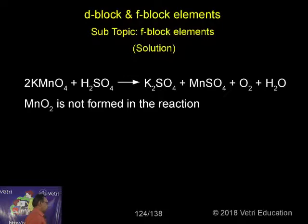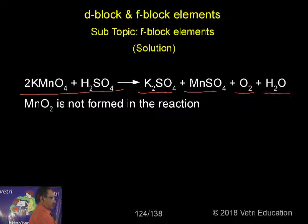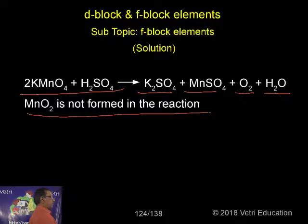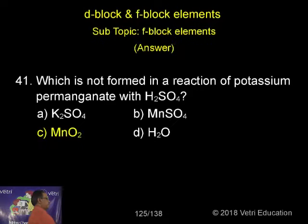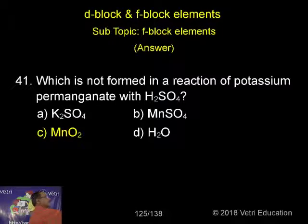Just see the reaction now. Potassium permanganate reacts with sulfuric acid to give potassium sulfate, manganese sulfate, oxygen, and water. So MnO₂ is not formed in this reaction. The correct answer is C, MnO₂.